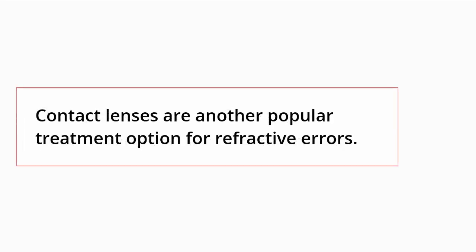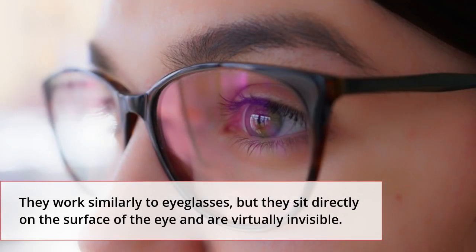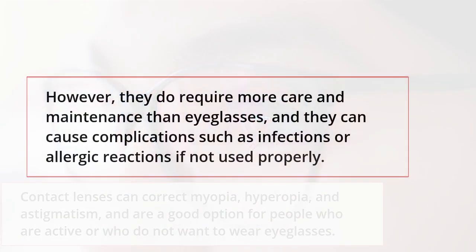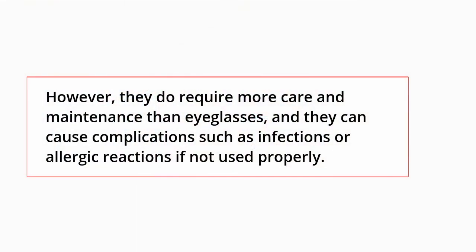Contact lenses are another popular treatment option for refractive errors. They work similarly to eyeglasses, but sit directly on the surface of the eye and are virtually invisible. Contact lenses can correct myopia, hyperopia, and astigmatism, and are a good option for people who are active or who do not want to wear eyeglasses. However, they require more care and maintenance than eyeglasses, and can cause complications such as infections or allergic reactions if not used properly.